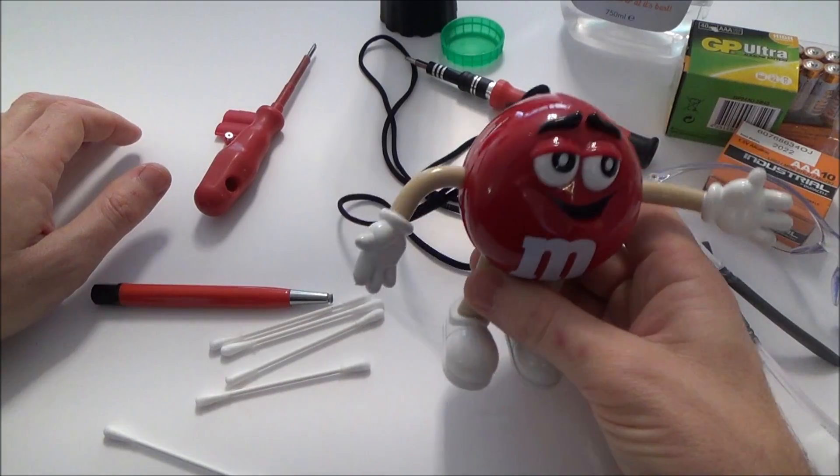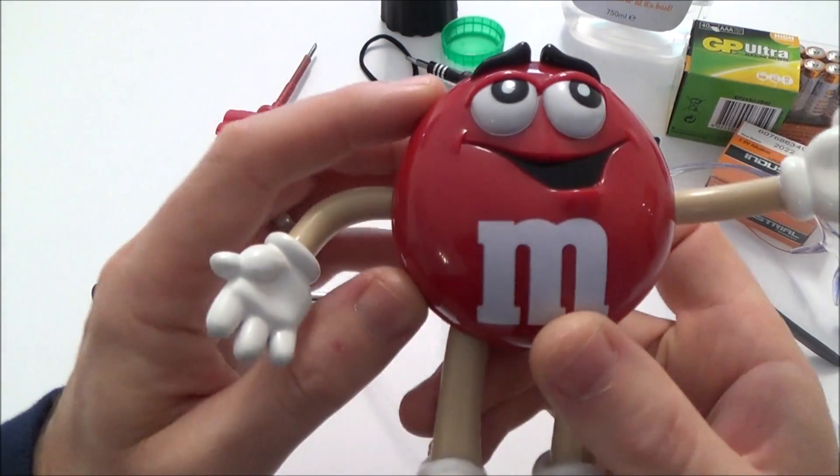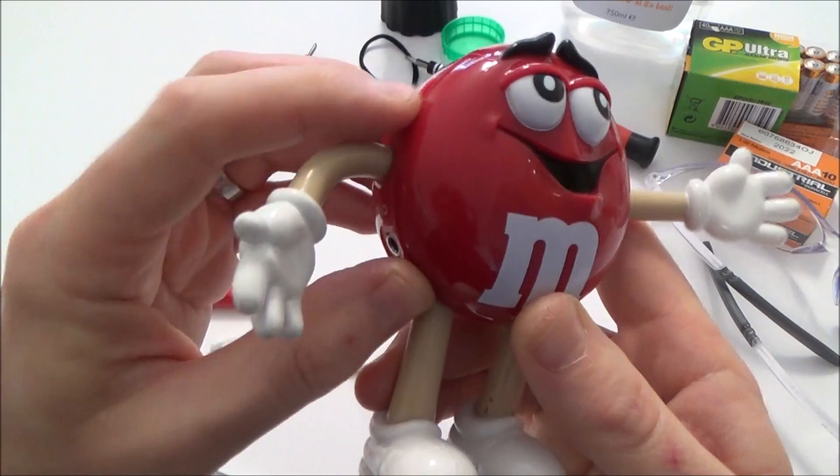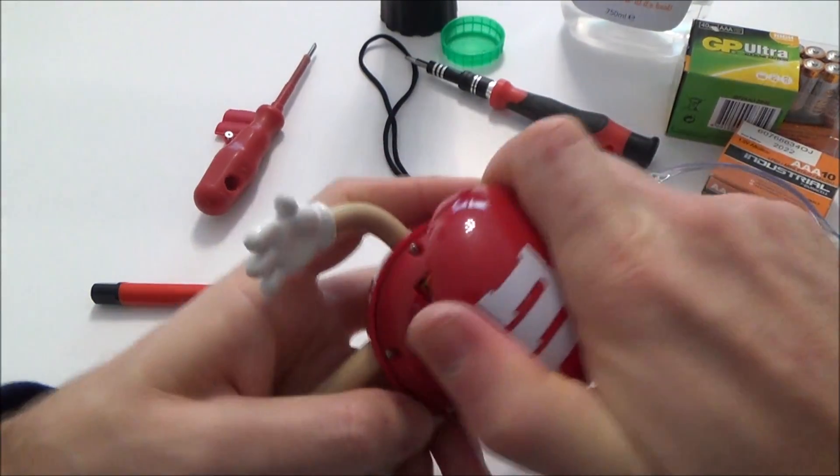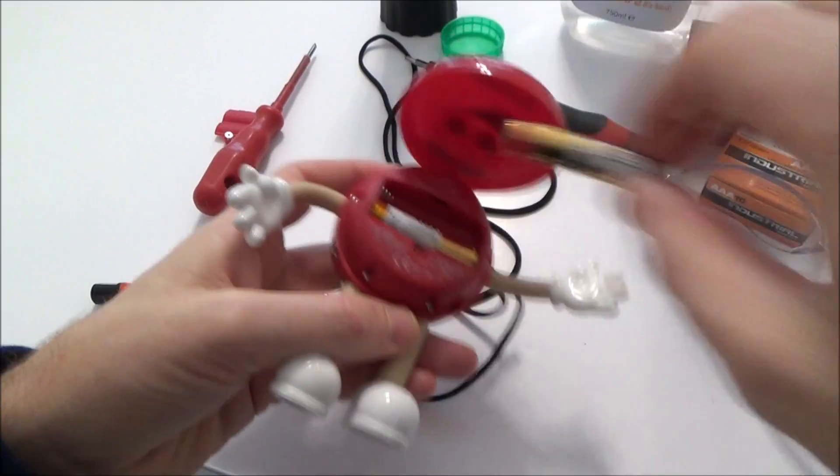If we have a look at this little M&M character here, if we turn it on it should be a radio but there's nothing happening and it's got new batteries in it, and that's because in here we've had a very bad leak.